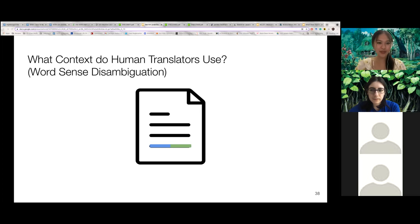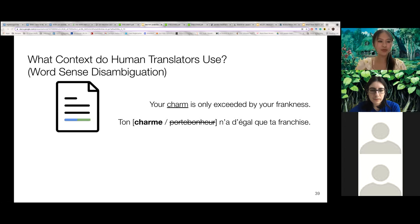For word sense disambiguation, the current sentence in either language is often sufficient. For example, charm in French means the quality of being charming, while porte-bonheur is a good luck charm. So these are two different things. And we find that words that indicate the role or the meaning of the polysemous word in English are useful to disambiguate.